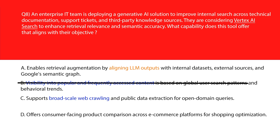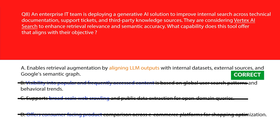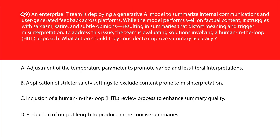Option C says supports broad-scale web crawling and public data extraction for open-domain queries — this targets open web indexing, not tailored enterprise knowledge integration. Option D would serve consumer shopping use cases, not enterprise-level AI search requirements — eliminate. We'll lock option A as the right answer.